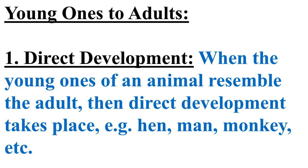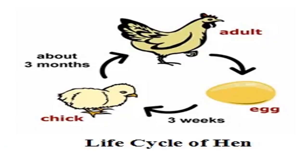Direct development: when the young ones of an animal resemble the adult, then direct development takes place. Examples are hen, men, and monkey. The life cycle of a hen shows: egg → three weeks → chick → about three months → adult hen.